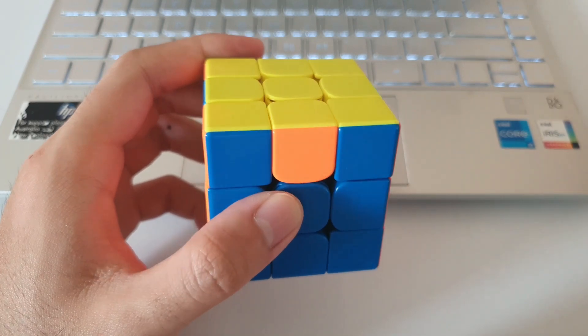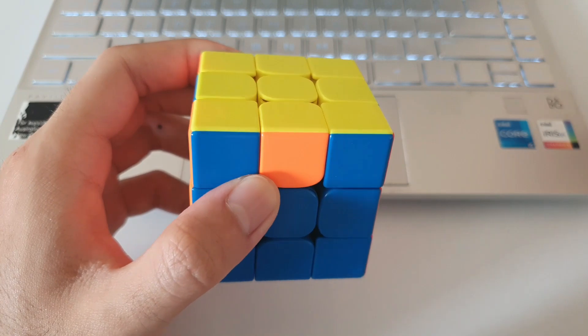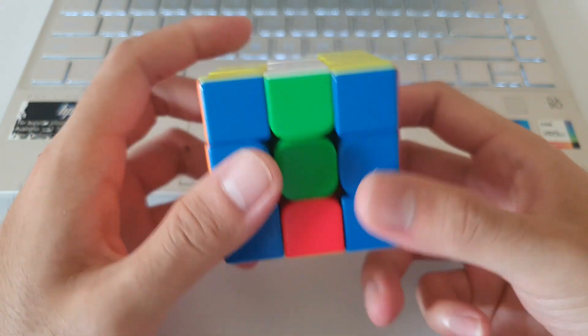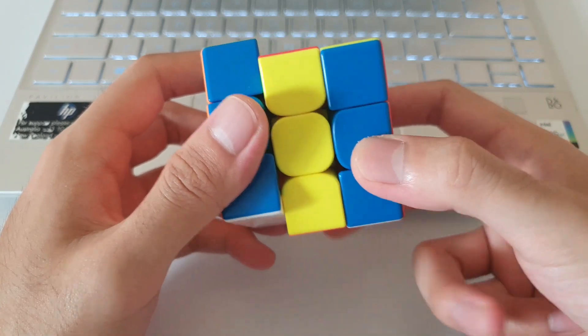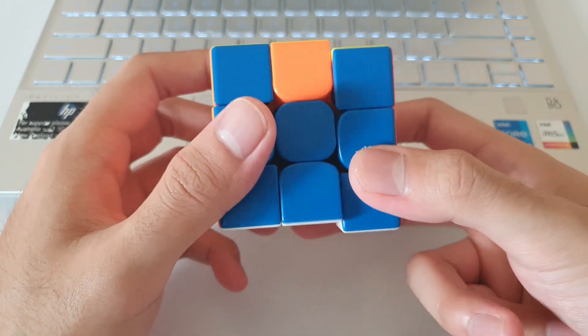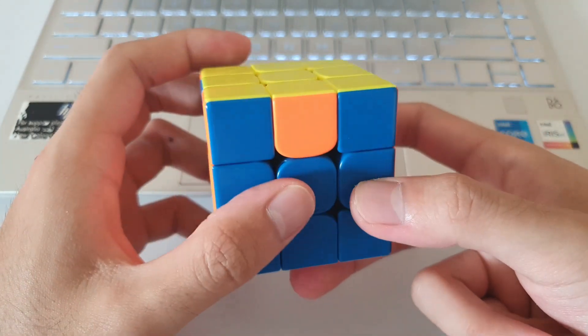The most difficult part of this algorithm is probably the M moves that you have to do. M primes should be pretty straightforward. I usually just use my middle finger to flick up the M layer like that. After a little bit of practice, you should be quite familiar with the M prime moves.